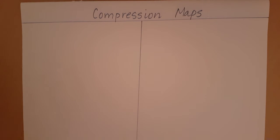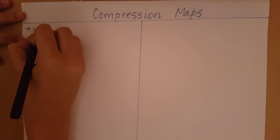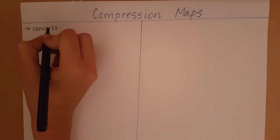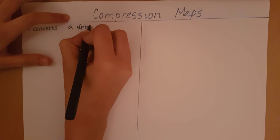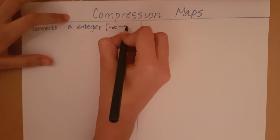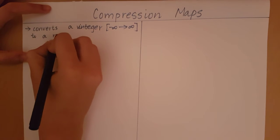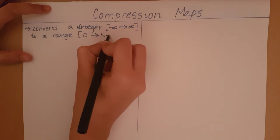Compression maps. A compression map is a function which converts a value or an integer in the range minus infinity to infinity to a range 0 to n-1.